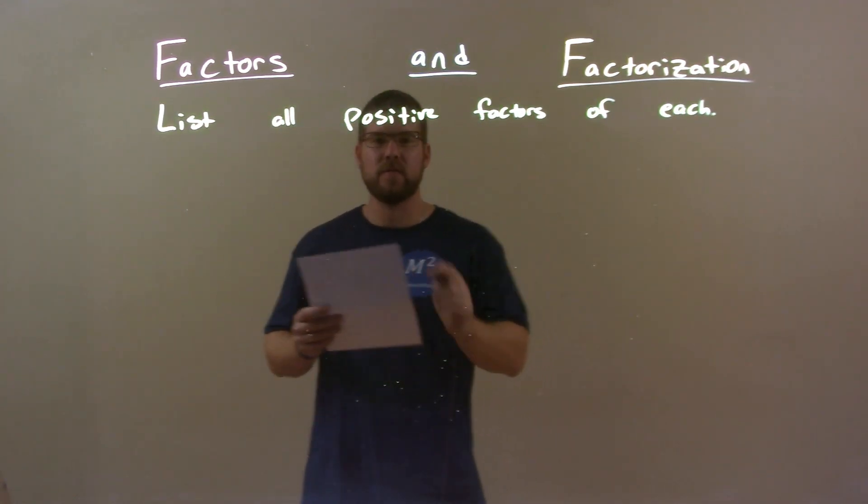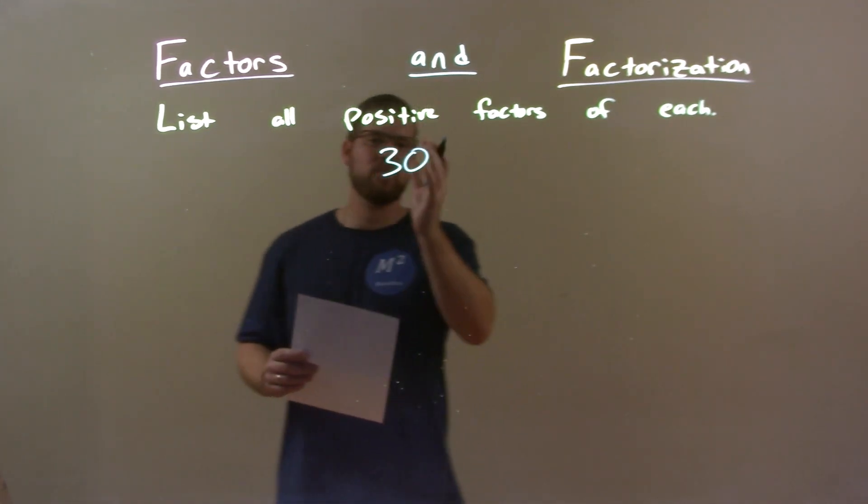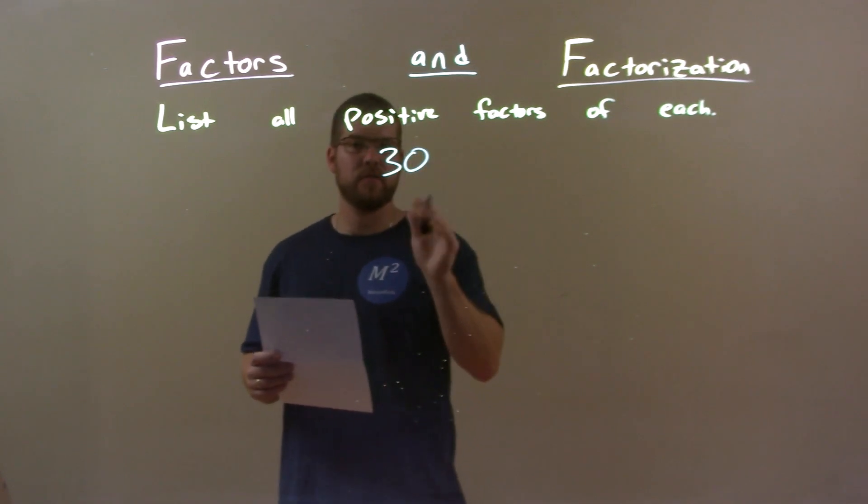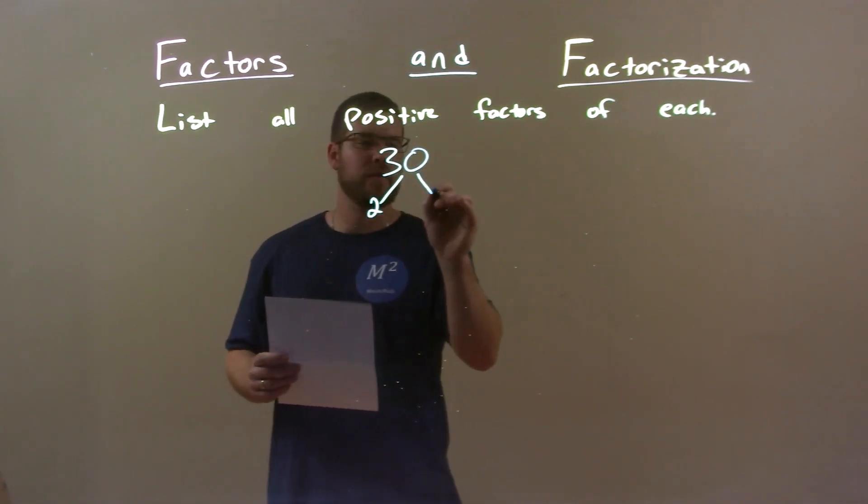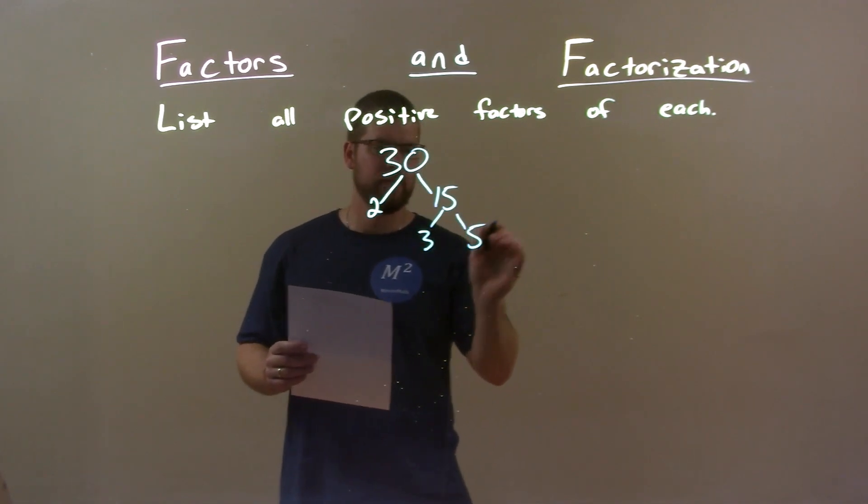So if I was given this number, 30. What I do with 30 is I try to break it down in prime factorization for this. So 2 and 15, right? And 15 is 3 and 5.